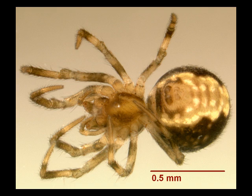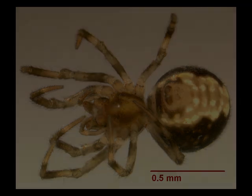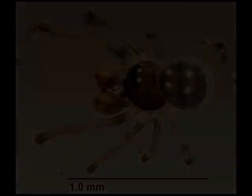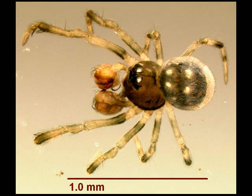Microdipoena nyungwe, Baiert, 1989, Rwanda. Microdipoena ogatai, Ono, 2007, Japan. Microdipoena papuana, Baiert, 1984, New Guinea. Microdipoena pseudojobi, Lin and Lee, 2008, China and Japan.